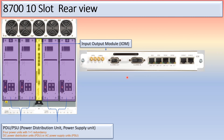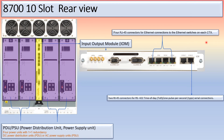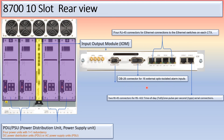This is the input/output module (IOM). It has 1–2 ports for 1PPS, 2 ports for 10 MHz, alarm out, alarm in, ES1, ES2, DCN1, DCN2, and Sync 1 and Sync 2 ports. There are four RJ45 connectors for Ethernet connection to Ethernet switches on each CTX, two RJ45 connectors for RS-422 time-of-day and one-pulse-per-second serial connection. The alarm input is a DB26 connector for 16 external opto-isolated alarm inputs, and the alarm output is a DB15 connector for four external alarm outputs.